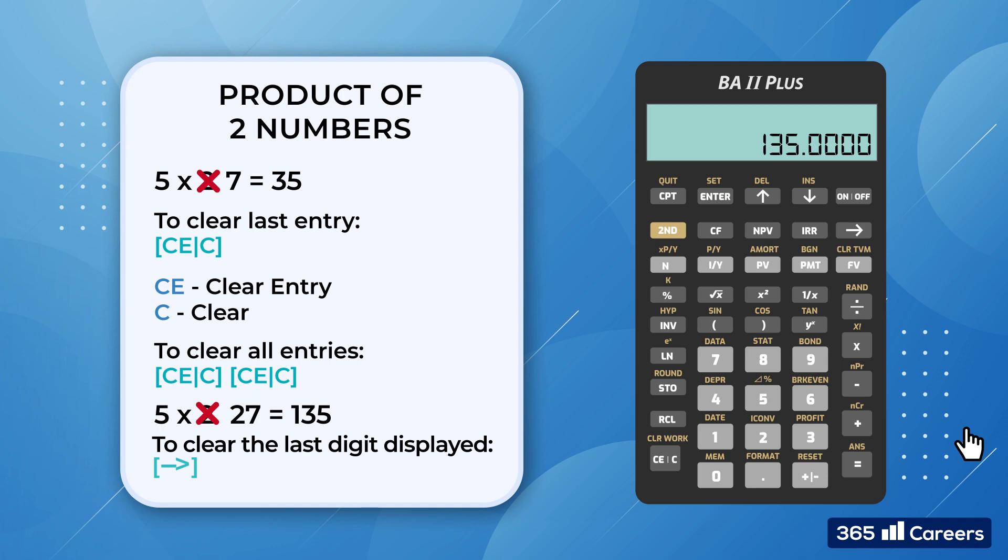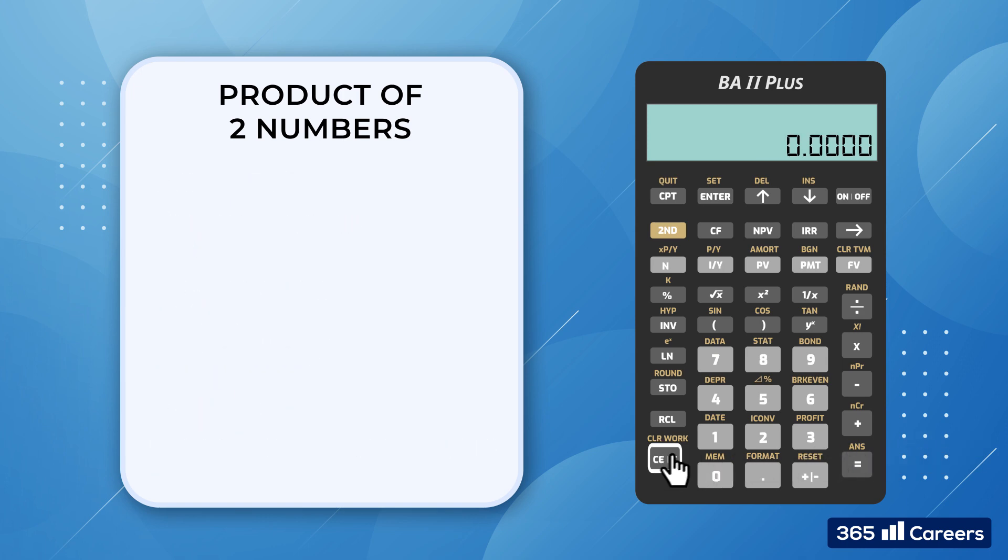These two alternative ways to correct your inputs are extremely important, especially when the number of digits becomes larger. Imagine that you have just started a lengthy calculation during the CFA exam involving 7 or 8-digit numbers and you accidentally make a mistake. Starting the whole operation over would be time-consuming, especially in a time-pressured situation. Alright, moving on.